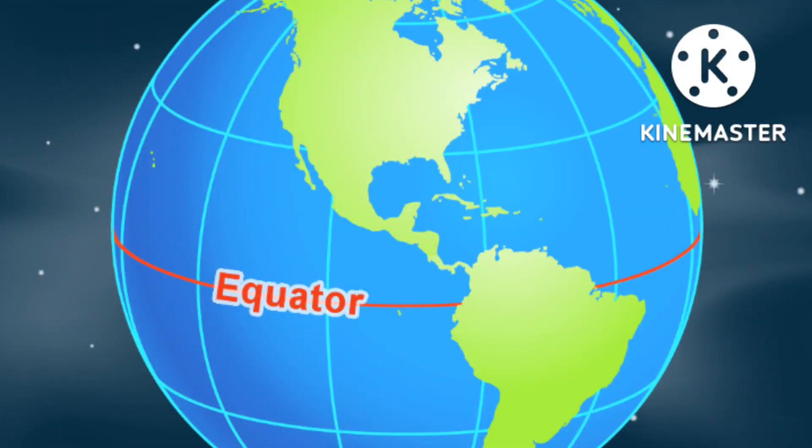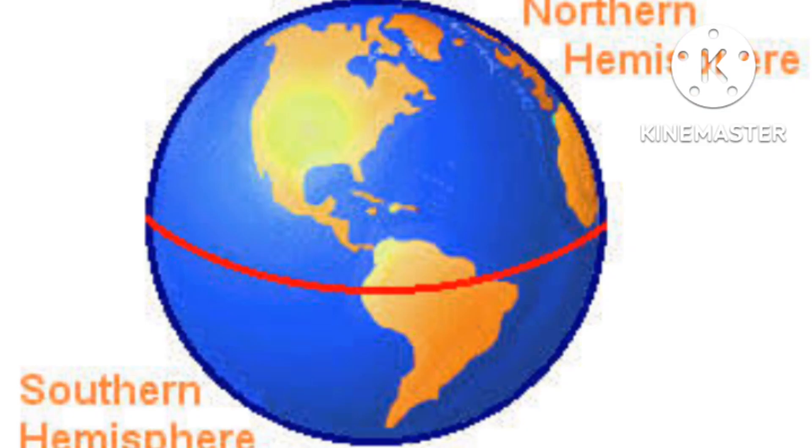Equator is an imaginary line around the middle of the earth. It is halfway between the north pole and the south pole. Equator divides our earth into two equal halves: northern hemisphere and southern hemisphere.